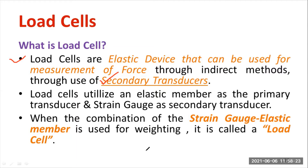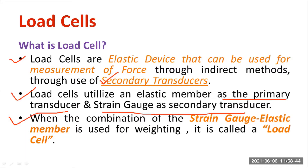The load cell utilizes an elastic member as a primary transducer. There will be a rectangular column, and inside that rectangular column, there will be one strain gauge, which acts as a secondary transducer. When a strain gauge is used in coordination with an elastic member for computing weight or force, it is known as a load cell. The major applications are computing weight and calculating force.